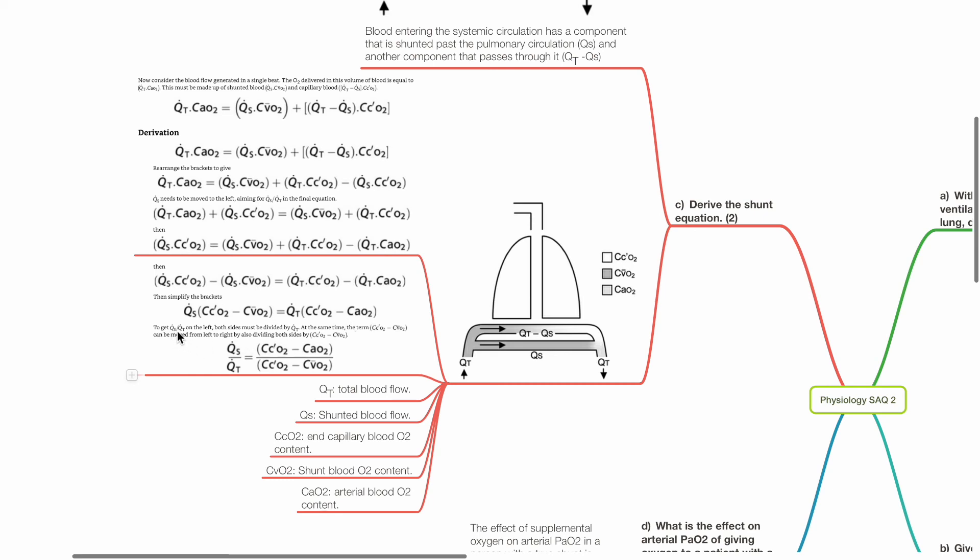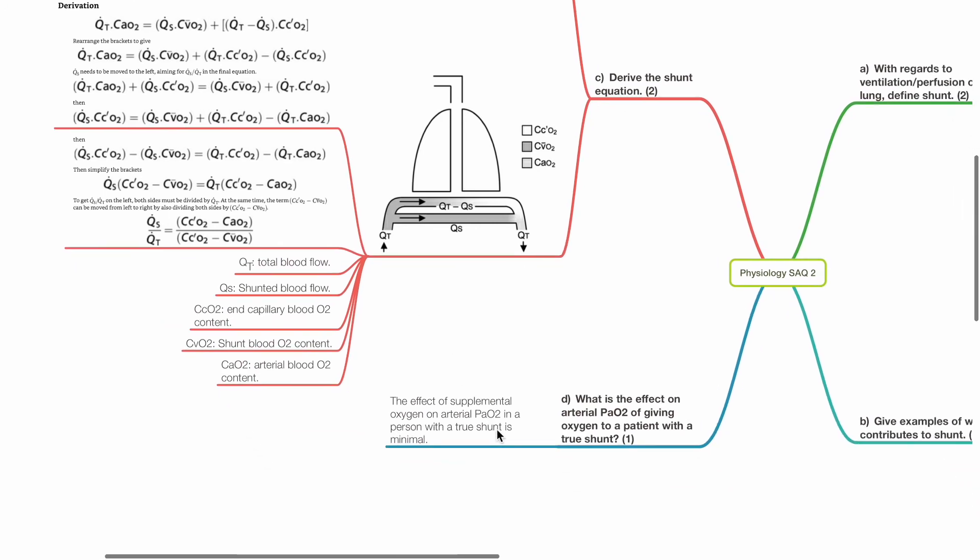To get Qs divided by Qt on the left, both sides must be divided by Qt. At the same time, the terms CcO2 minus CvO2 can be moved from the left to the right by also dividing both sides by CcO2 minus CvO2. Giving the shunt equation as Qs divided by Qt equals CcO2 minus CaO2 divided by CcO2 minus CvO2.